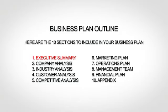The first section is your executive summary, which is essentially the introduction to your business plan. The next section is your company analysis, which gives a little more background. Next up is your industry analysis, where you talk about your market and trends. The fourth section is your customer analysis, where you go more in depth about your target market. The fifth section is your competitive analysis, where you provide an analysis of your competition, including what differentiates you from your competitors.